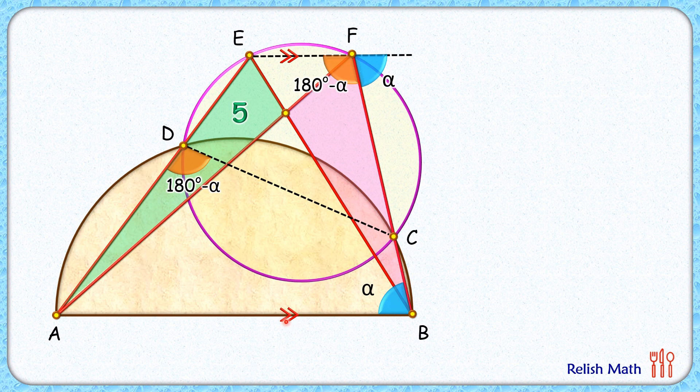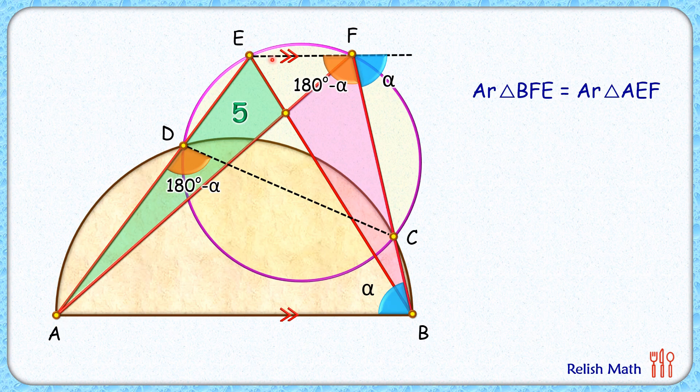As these two lines are parallel, for triangle AEF and BFE, triangle BFE and triangle AEF have got the same base and same height. Thus these areas are equal. Triangle BFE area is this pink area plus this triangle area, so let's assume this triangle area is x. So area of triangle BFE is pink area plus x.